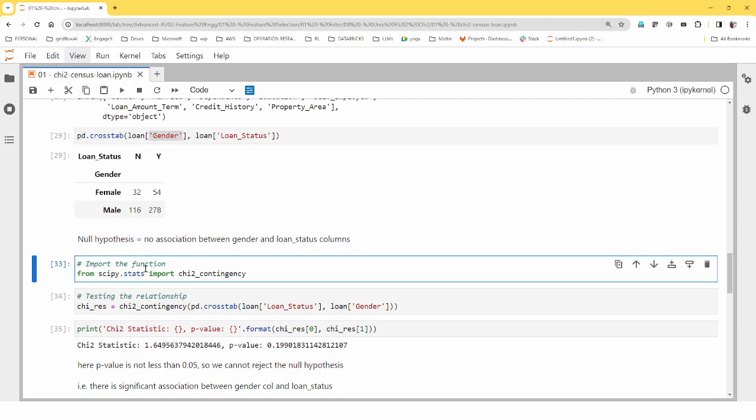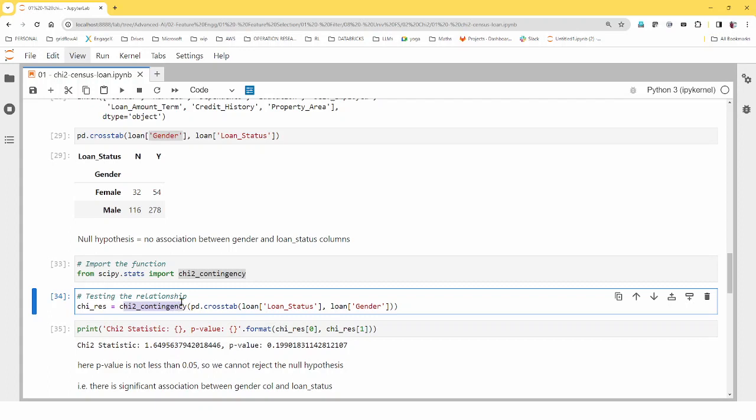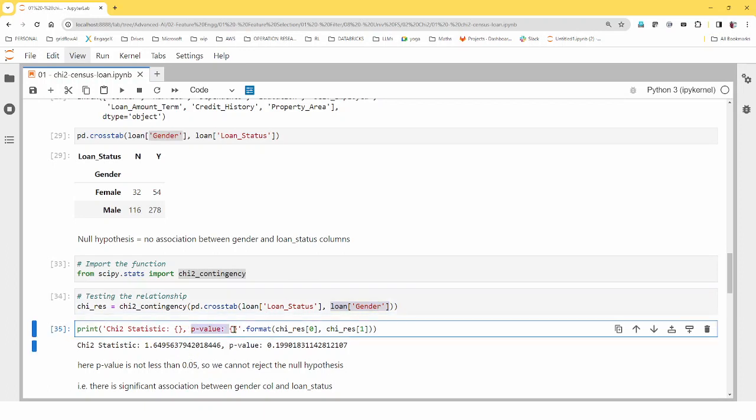So chi-square is part of your scipy. So use the scipy package, import chi-square, chi-square contingency with the cross tab that we just did. And the chi-square test is against the between the loan status and the gender. And it returns the p-value, which is 0.19. And this is not less than 0.05. That means you will not be able to reject it. That means the null hypothesis holds. That means there is no association between the loan status.